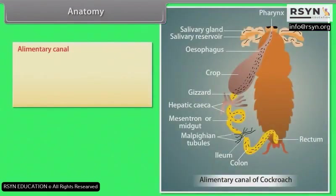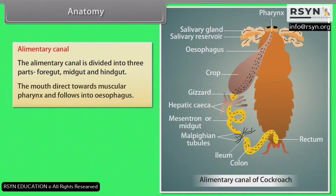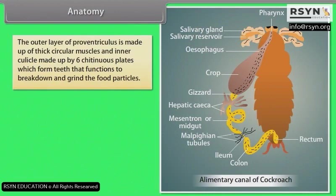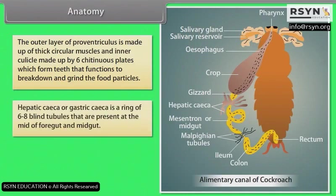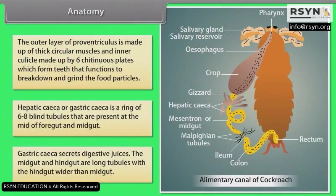Anatomy — Alimentary Canal: The alimentary canal is divided into three parts: foregut, midgut and hindgut. The mouth directs towards a muscular pharynx and follows into the oesophagus. The oesophagus ends in a sack-like structure called the crop, used for storing food. A gizzard or proventriculus is present in close contact with the crop. The outer layer of the proventriculus is made of thick circular muscles, and the inner cuticular layer is made up of six chitinous plates forming teeth to break down and grind food. Hepatic or gastric caecae — a ring of six to eight blind tubules — are present at the junction of foregut and midgut and secrete digestive juices.